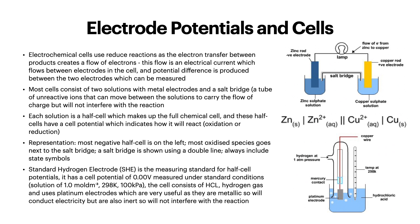Now onto electrode potentials and cells. Electrochemical cells use redox reactions as the electron transfer between products creates a flow of electrons. This flow is an electrical current which flows between electrodes in the cells, and a potential difference is produced between the two electrodes which can be measured. Most cells consist of two solutions with metal electrodes and a salt bridge — a tube of unreactive ions that can move between the solutions to carry the flow of charge but do not interfere with the reaction. Each solution is a half-cell which makes up the full chemical cell, and these half-cells have a cell potential indicating whether oxidation or reduction will occur. For representation, it's really important to draw these correctly: the most negative half-cell is on the left, and the most oxidized species goes next to the salt bridge.